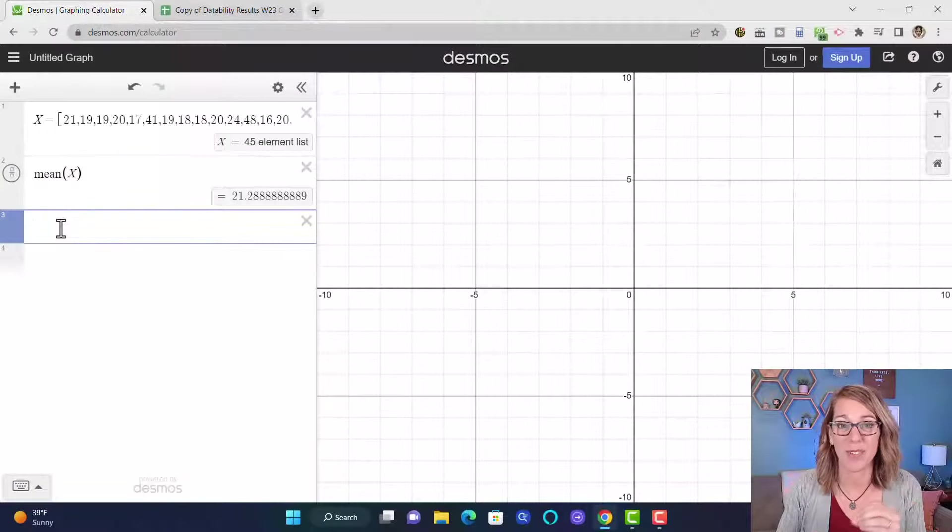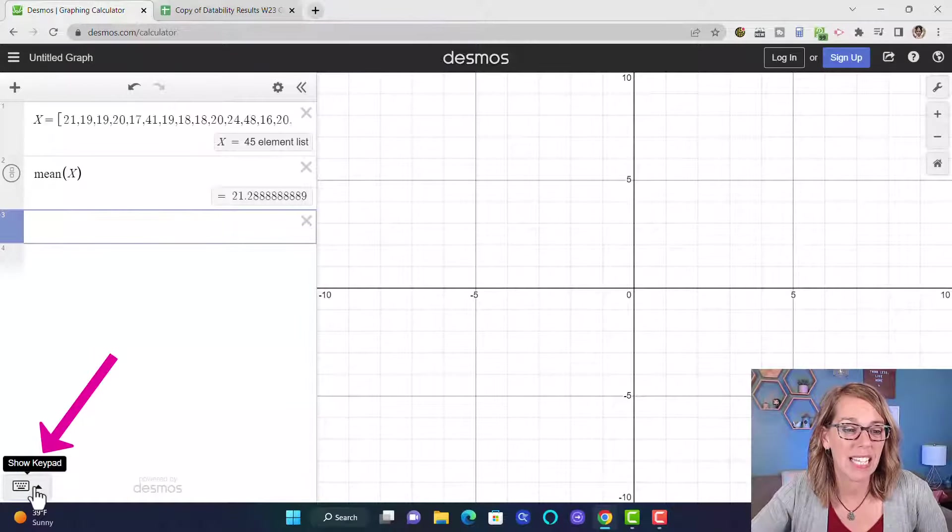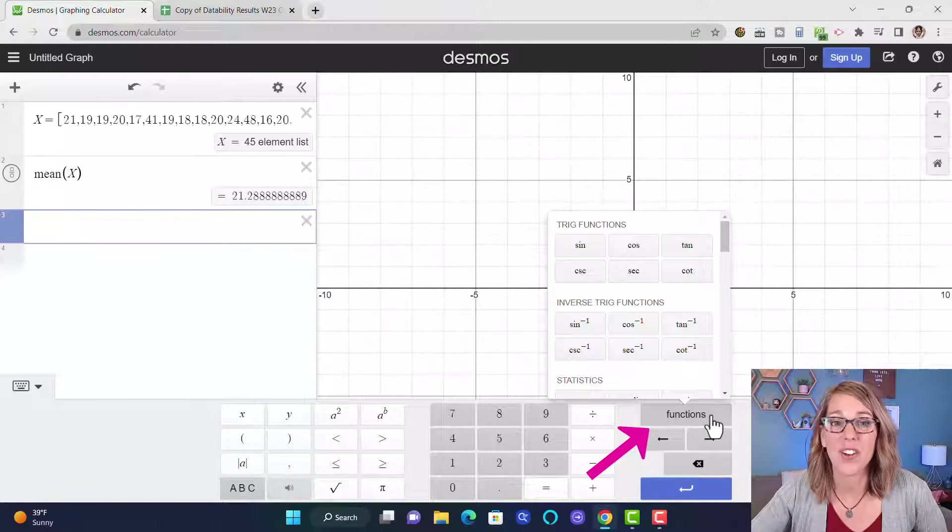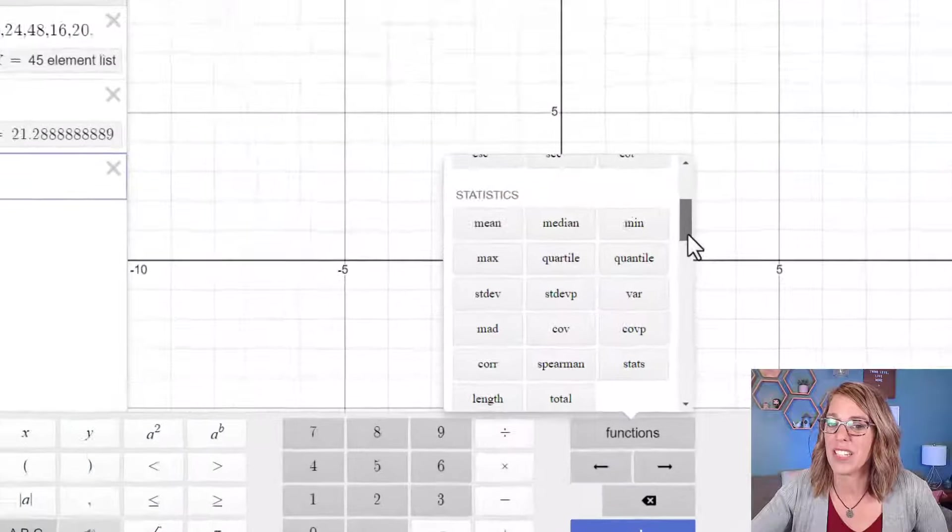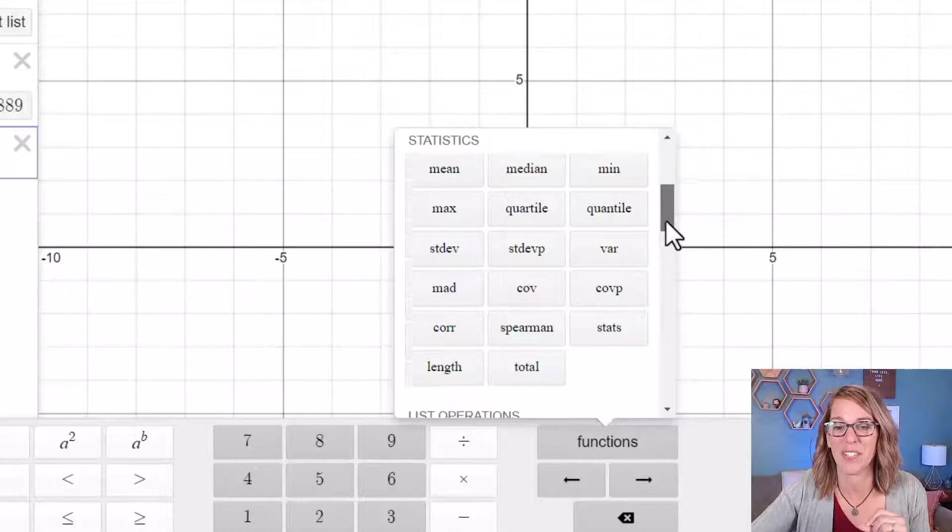Instead you can go ahead and open the keypad. I'm going to click on show keypad in the lower left corner and then functions to open up all the different function menus. And if you scroll down just a little ways you will see that statistics menu.